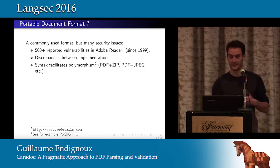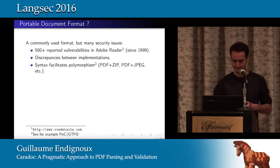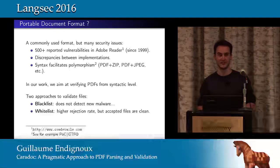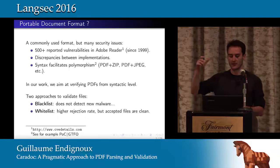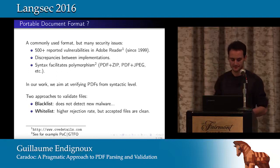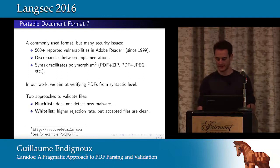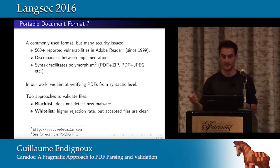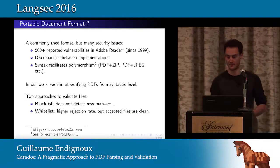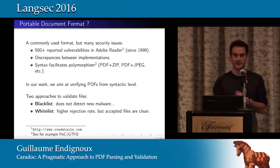In our work, we aimed at verifying PDF from the syntactic level, from the very lower layer of the format, whereas previous work analyzed semantic content such as the JavaScript interpreter. There are basically two approaches to validate a file: the blacklist approach, which most malware detectors implement — they collect existing malware and try to blacklist them, but it won't detect new forms — and the whitelist approach that we advocate, accepting only files that are clean, at the expense of a higher rejection rate.